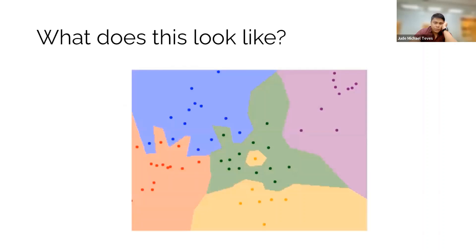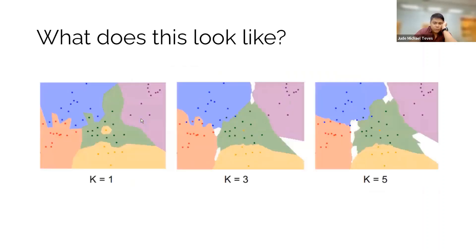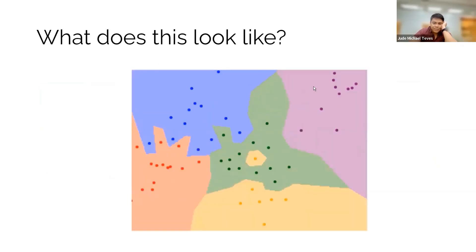So what's this? What does this look like? So for example, if your K is equal to one, then this is what happens to all of the possible data points that you have in this two-dimensional space.